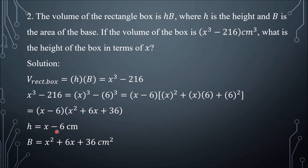So h equals x minus 6, and b equals x squared plus 6x plus 36. Therefore, the height is x minus 6 centimeters.